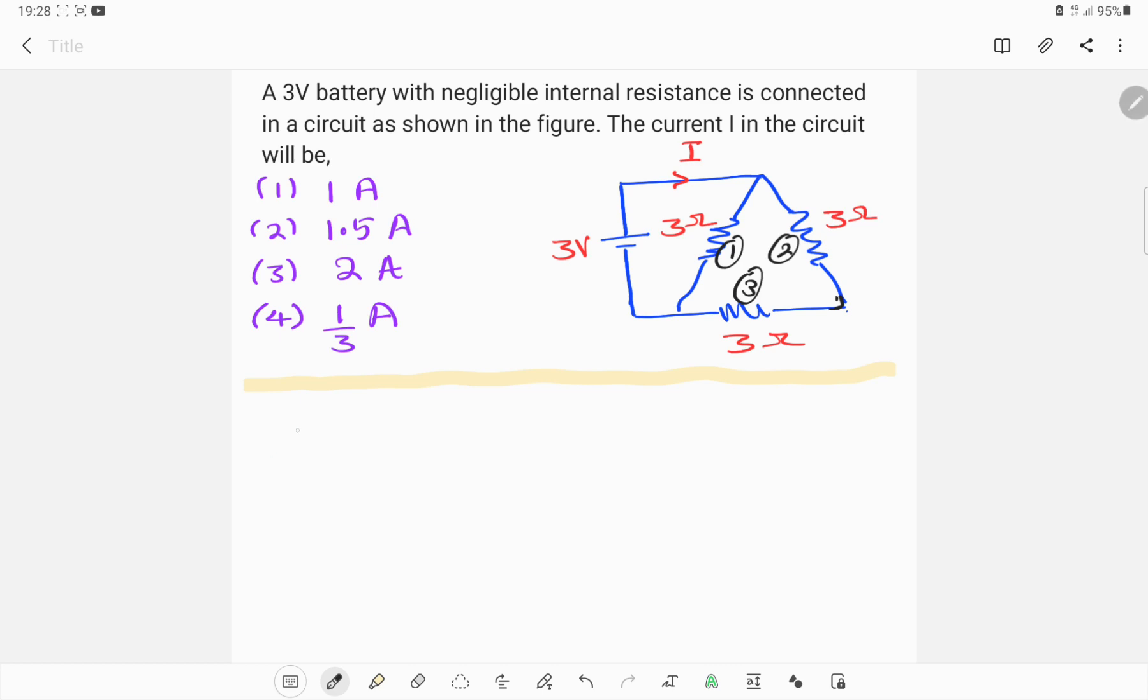So equivalent resistance of circuit are equal to 6 multiplied by 3 divided by 6 plus 3, so 2 ohms.